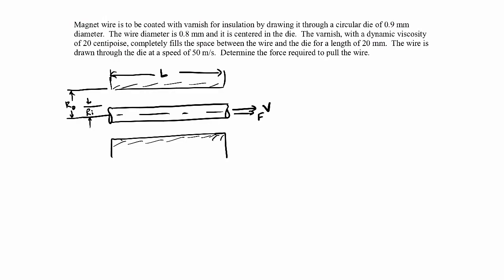We're trying to find the force required to pull this wire off to the right. The reason we have to apply some force is because the varnish will want to resist the movement of the wire. If we sketch out the velocity field for the varnish, we know that from the no-slip boundary condition the velocity at the walls will be zero, and the velocity at the wire will be V — those are our boundary conditions.